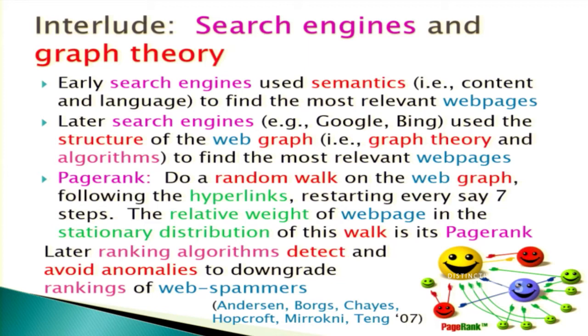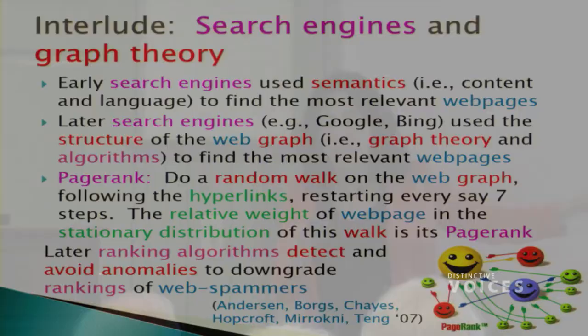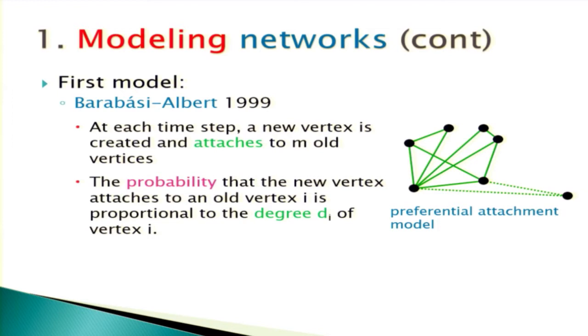Web spammers use high link counts to fool search engines. We came up with ranking algorithms that detect anomalies: as you do the random walk, if you encounter something anomalous, it automatically gets downgraded — you don't need a human to remove it, which is what Google was doing manually, leading to lawsuits. The legal profession believes algorithms are completely neutral, which is of course ridiculous if you know how to write algorithms. I'm working with people at Harvard Law on showing that algorithms are not really neutral, doing some theorems on that.